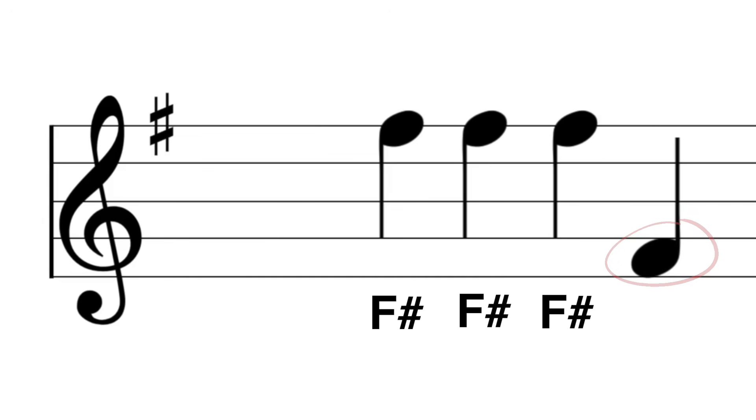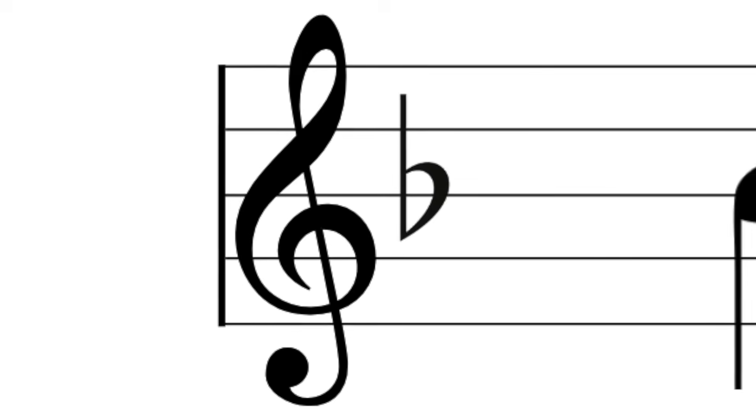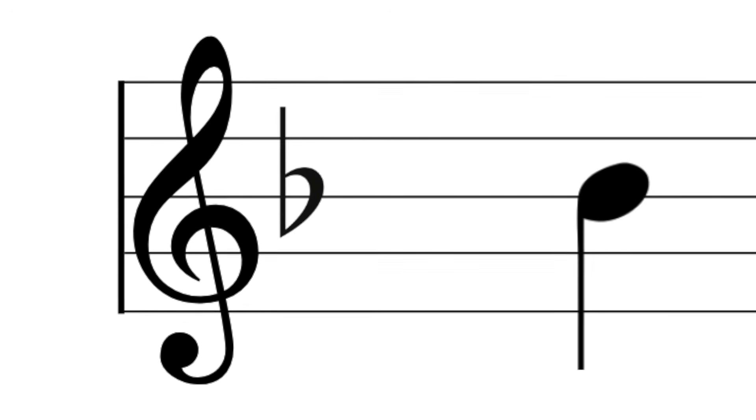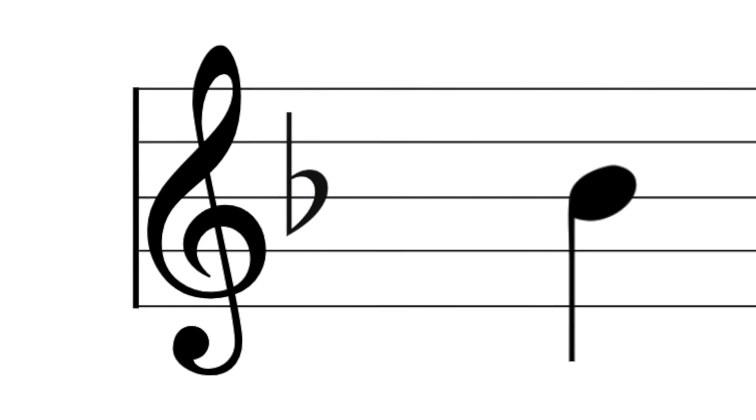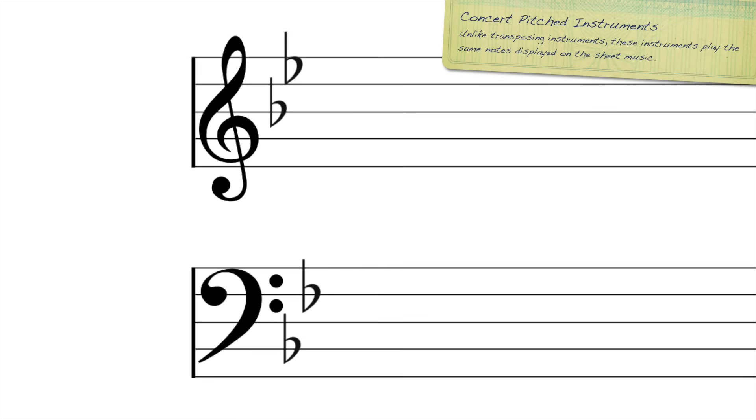French horns see this key signature, the key of F major, which has one flat on the note B. Using the same logic as before, any note placed where B normally goes will be interpreted as B flat.